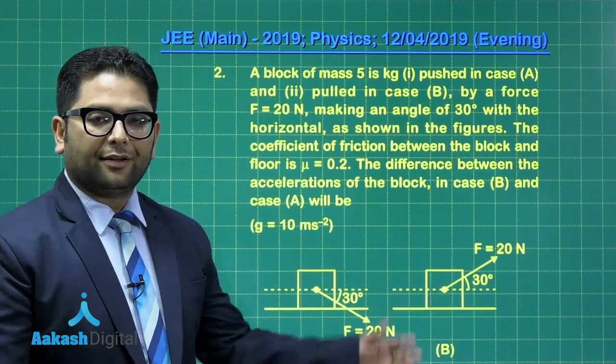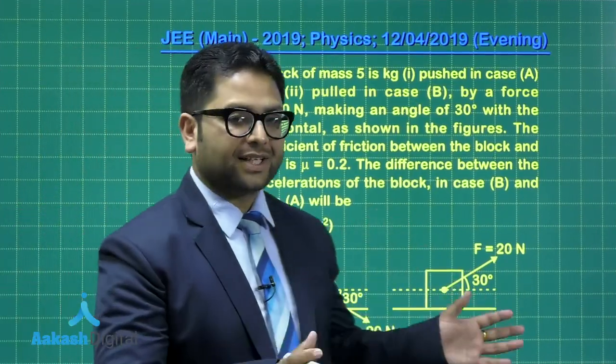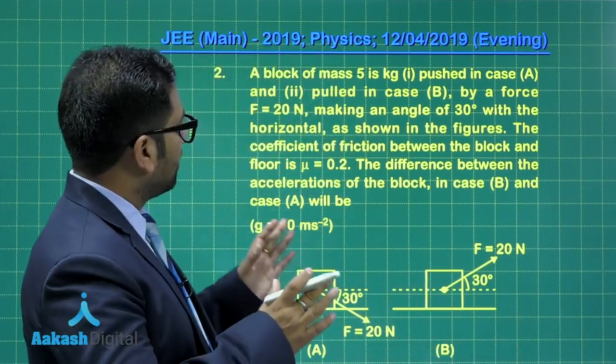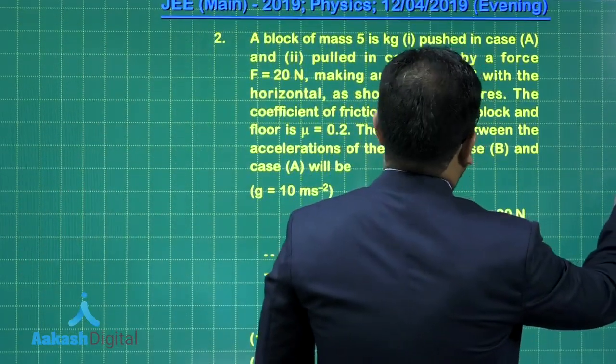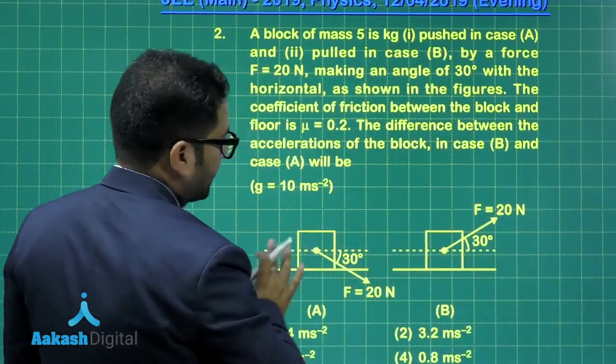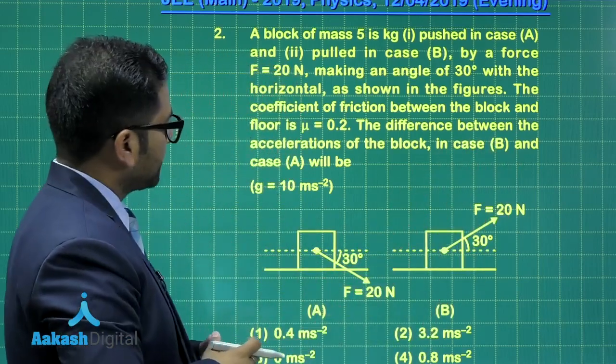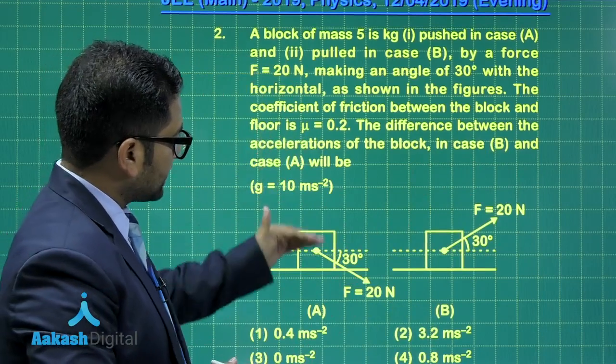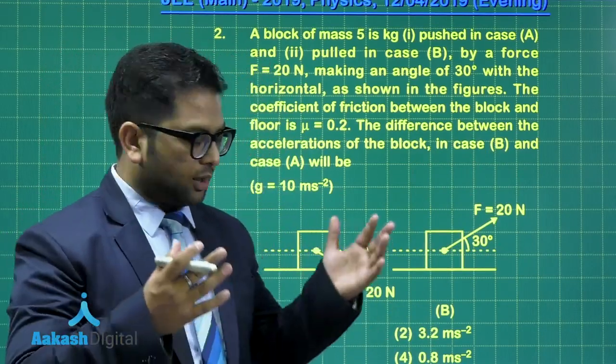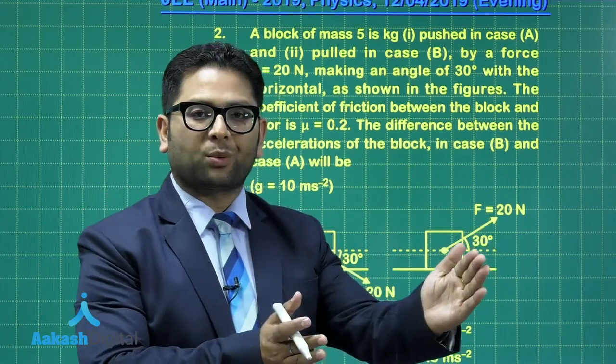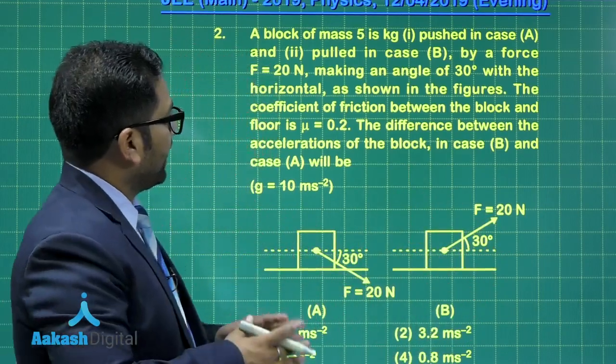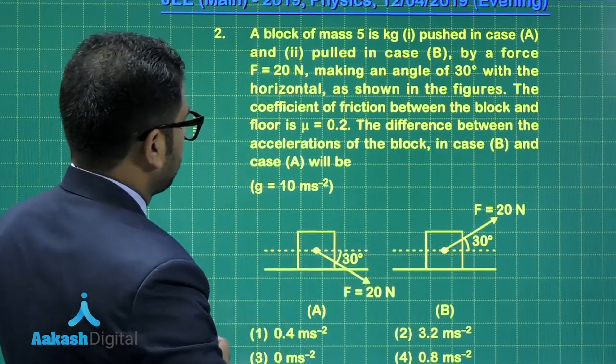Now let's move to the second question from dynamics where friction is involved. Here, in both situations the force acted upon the block is 20 Newton, but in one case the force is acting in this direction and in the other case in this direction. It's very clear that in this case the force results in an increment in normal reaction. The weight would have an additional factor resulting in normal reaction higher than the weight, and here the normal reaction would be less than the weight. This has a direct consequence on the value of friction.